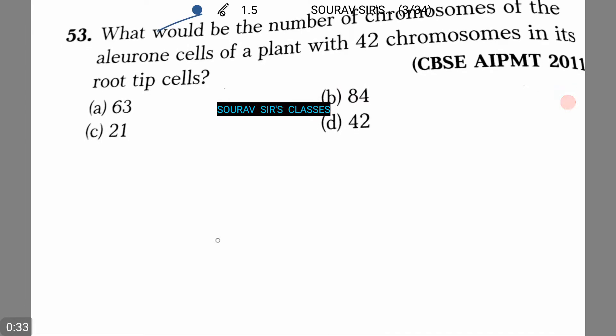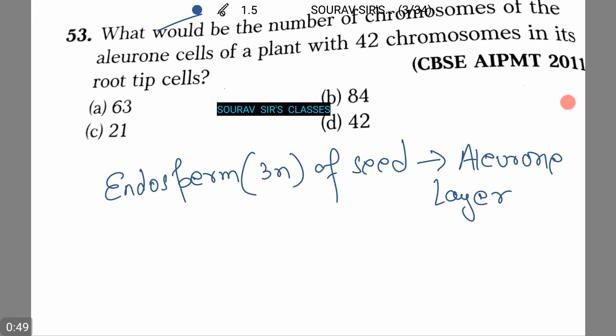The outermost cell layer of the endosperm, which has 3N of seed, is called the aleurone layer. We need to know each and everything from the base to answer this question.